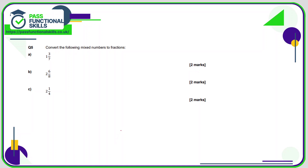Moving on to question five: convert the following mixed numbers to fractions. One and three sevenths — that's one times seven plus three: seven plus three is ten, so ten sevenths. Two and six eighths — two times eight plus six: sixteen plus six is twenty-two, so twenty-two over eight. Two and a quarter — two times four plus one: eight plus one is nine, so nine over four.